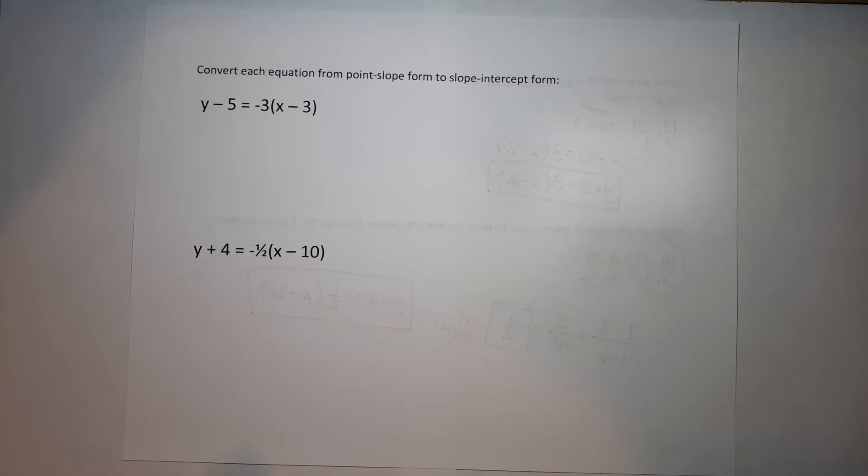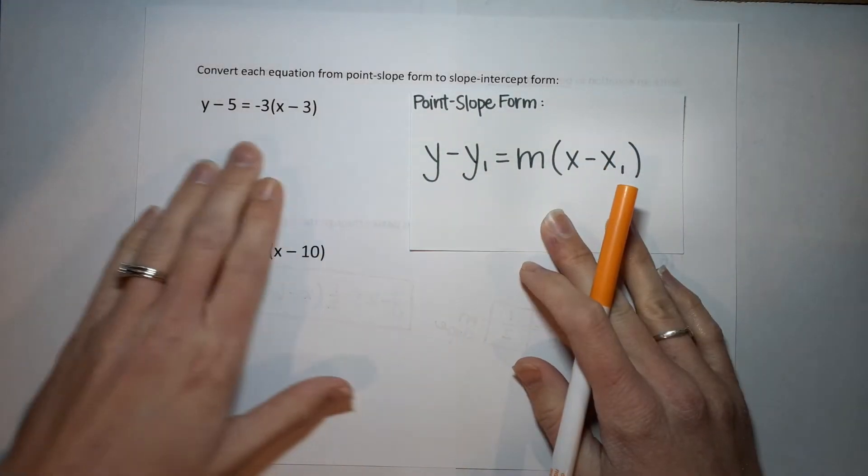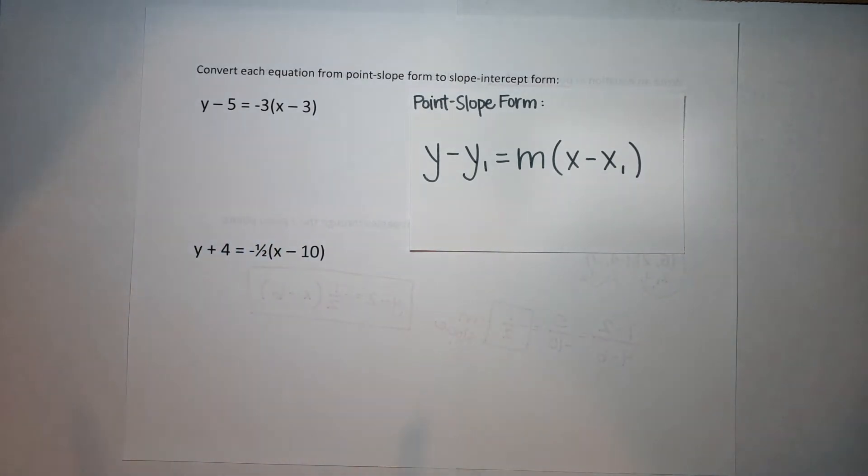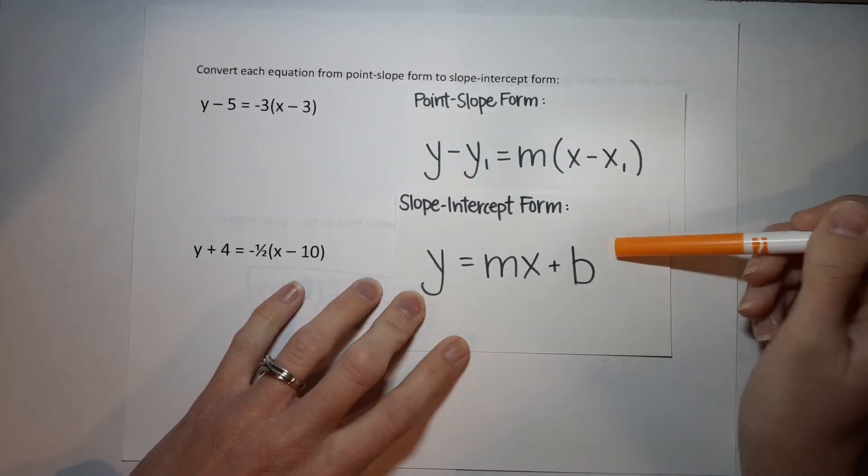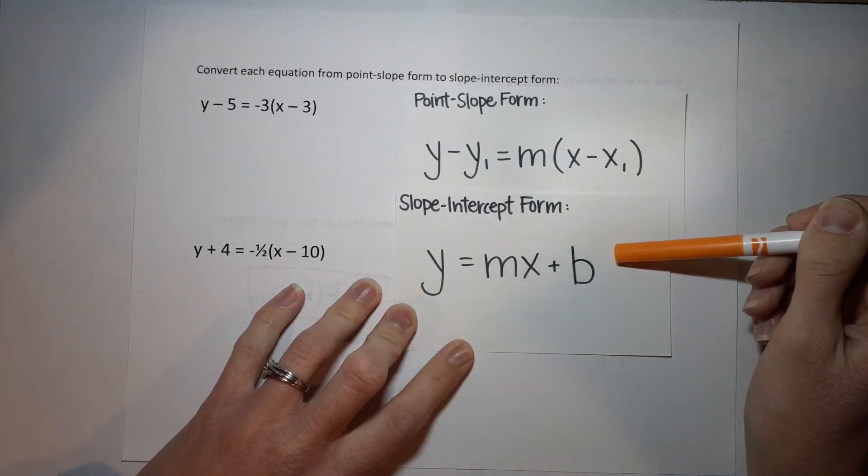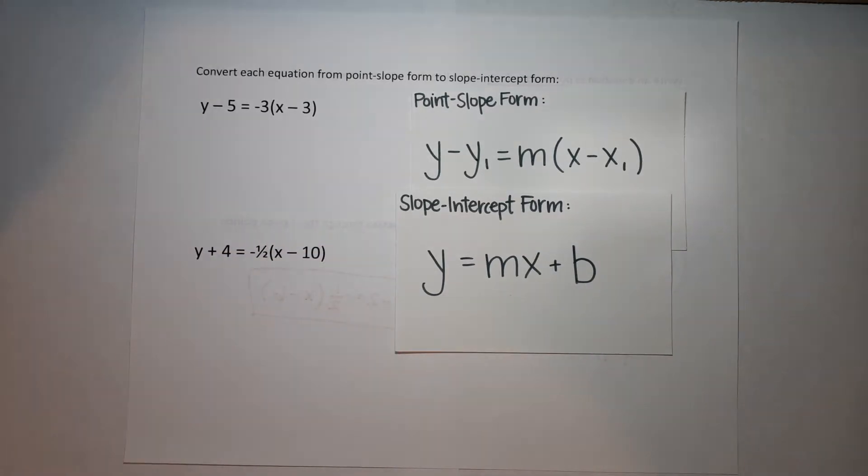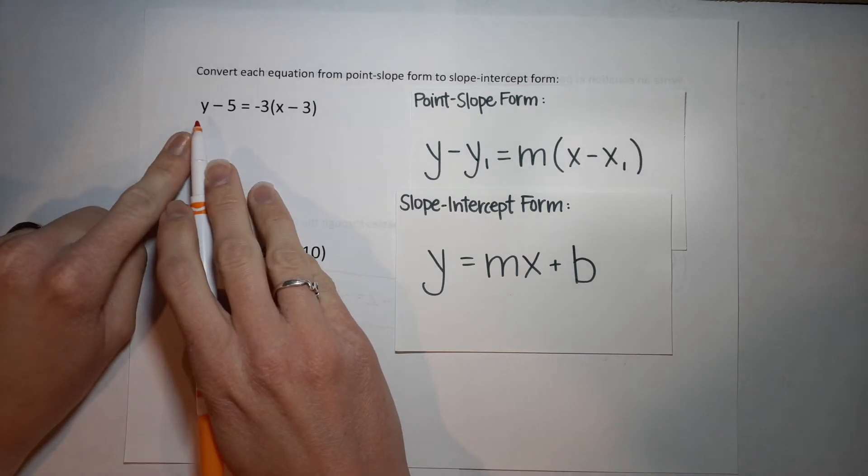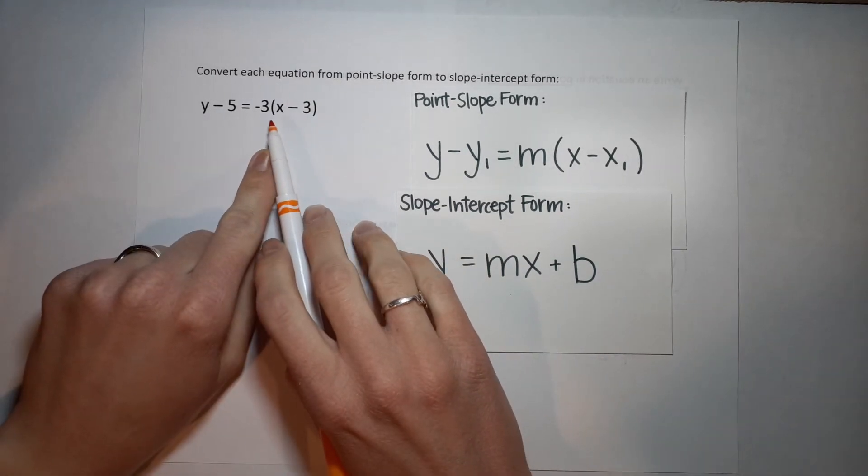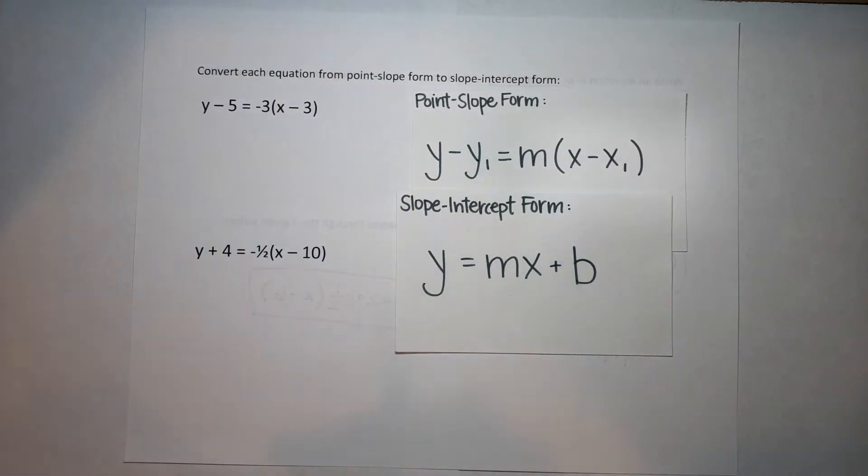So we are currently in point-slope form. But they, whoever they are, they don't want point-slope form. They want slope-intercept form. So how do we do that? All we need to do is we want this y all by itself, right? So we need to simplify it so y is all by itself.